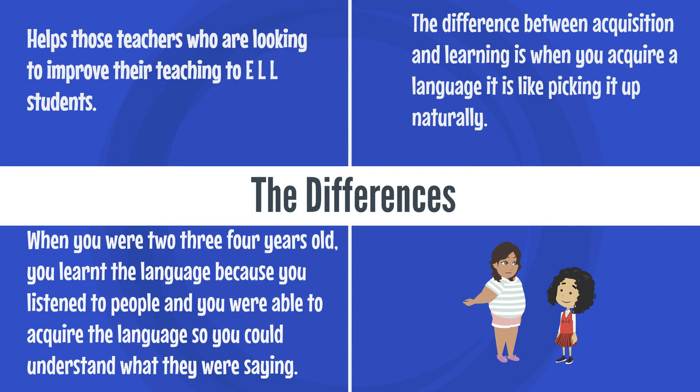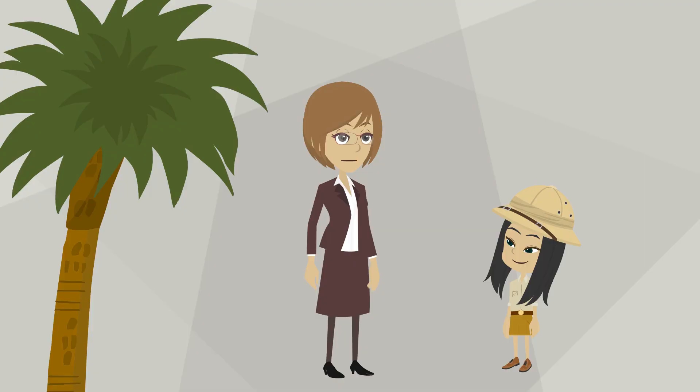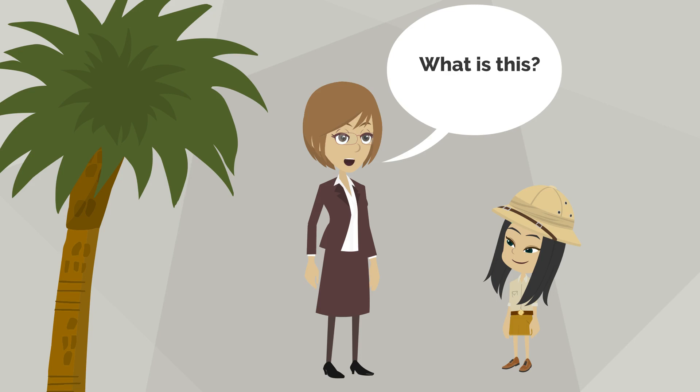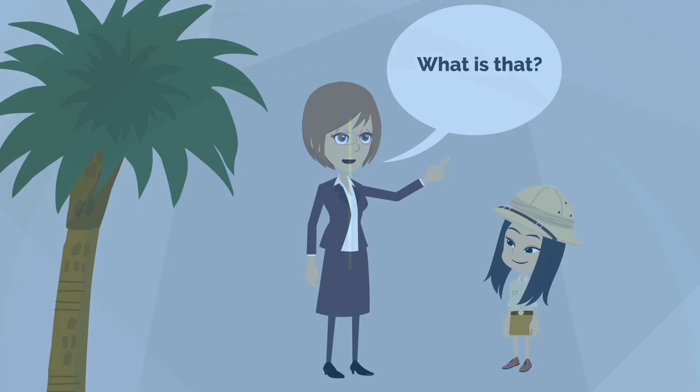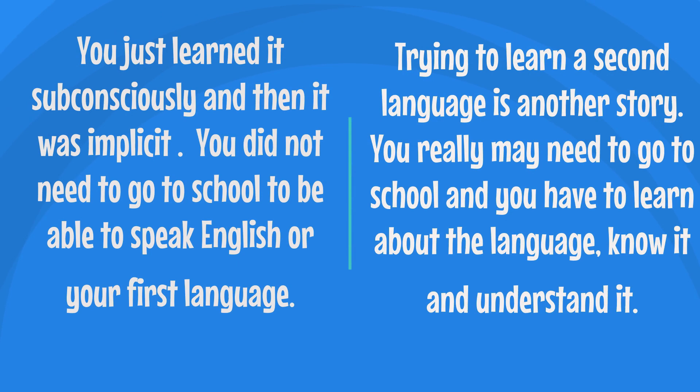The difference between acquisition and learning: when you acquire a language, it is like picking it up naturally. When you were 2, 3, or 4 years old, you learned the language because you listened to people and were able to acquire it so you could understand what they were saying. You didn't need your parents to sit you down and say 'this is an apple' or 'this is an orange.' You just learned it subconsciously — it was implicit. You did not need to go to school to speak English or your first language.